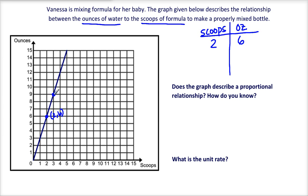Here's another point: (3, 9). This point tells me 3 scoops of formula mixes with 9 ounces of water. Let's do one more. This one says 4 scoops combines with 12 ounces.